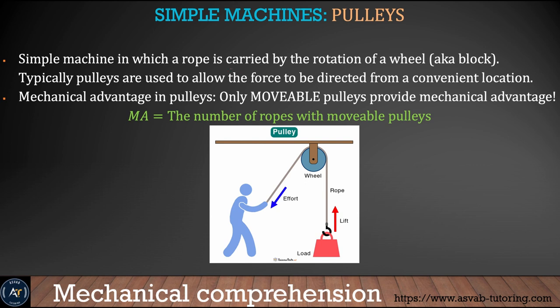Next we learn the pulley — a simple machine in which a rope is carried by the rotation of a wheel. The mechanical advantage of a pulley equals the number of ropes in the movable pulley. The more pulleys you use, the less load you need to apply to lift an object. That's how large concrete blocks can be lifted with a very small machine.